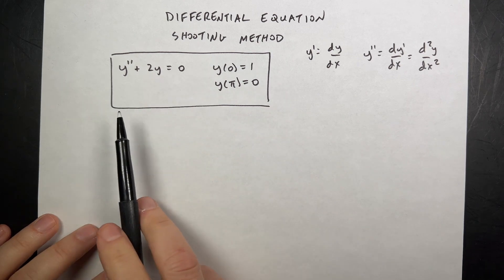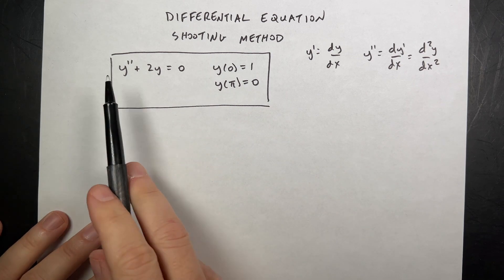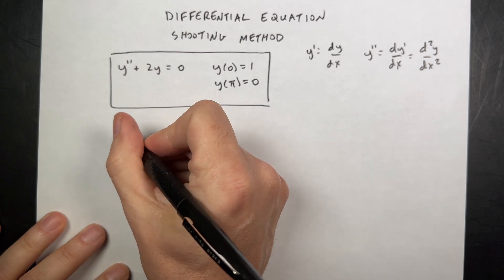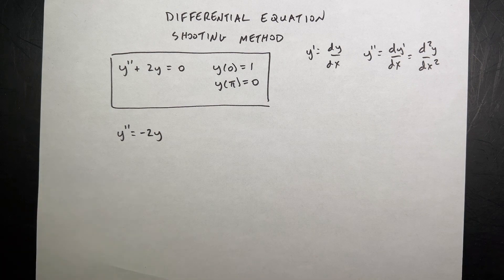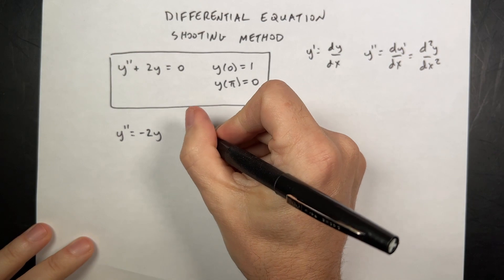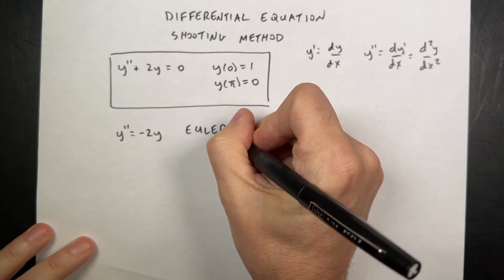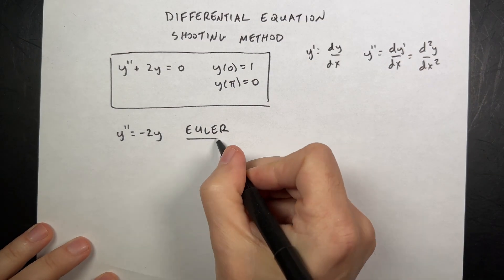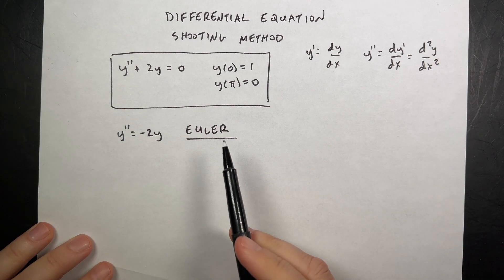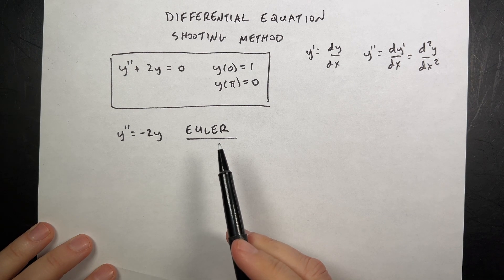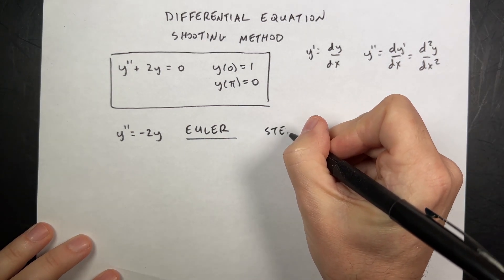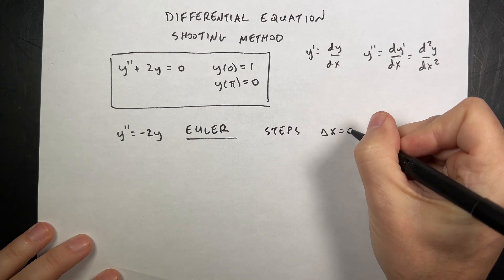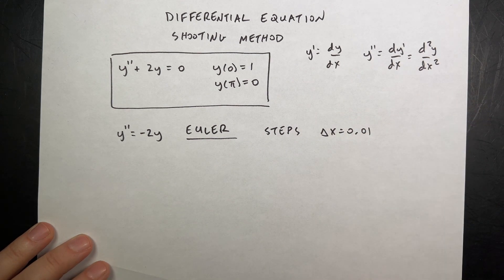How do we solve this numerically? The first thing we're going to do is solve for y double prime. I'm going to take this equation and say y double prime is negative 2y — I just added 2y to both sides. Now we're going to use the Euler method, which can solve differential equations by breaking them into parts. I'm going to break this into step sizes: delta x equals 0.01. I just picked a number.